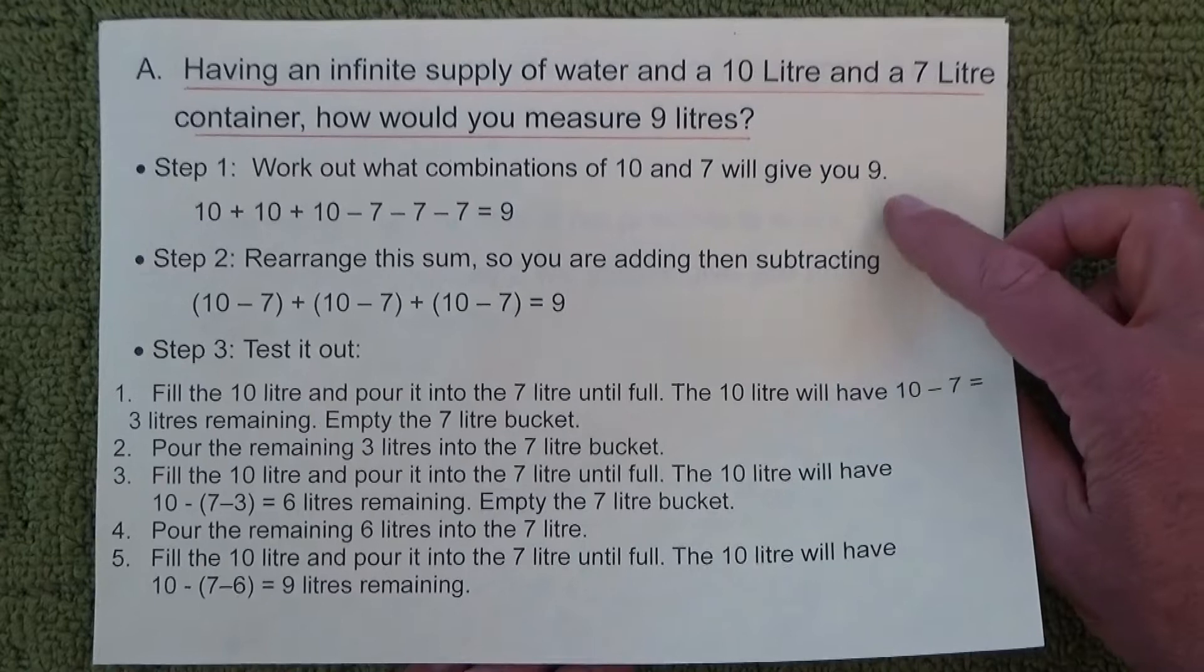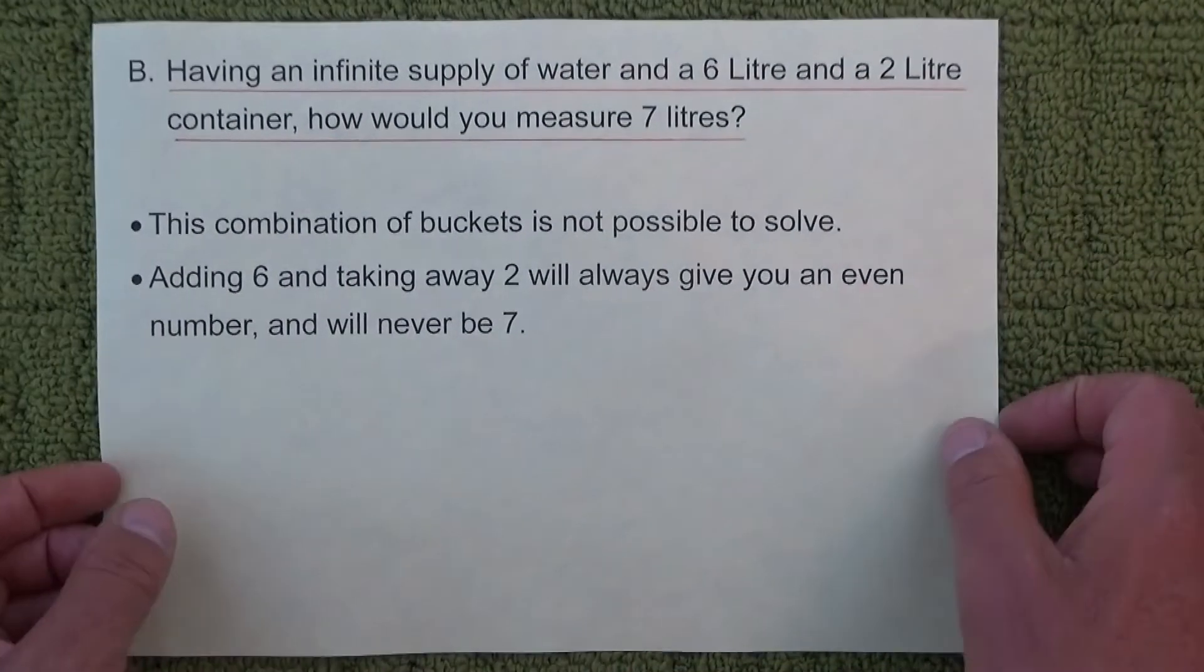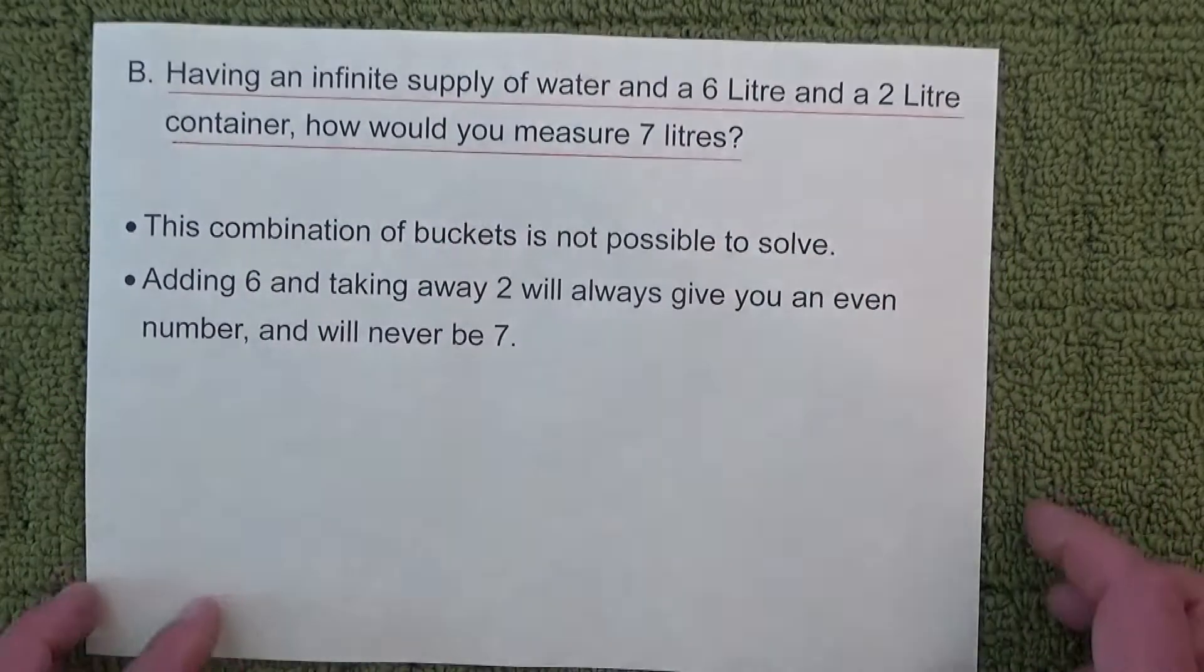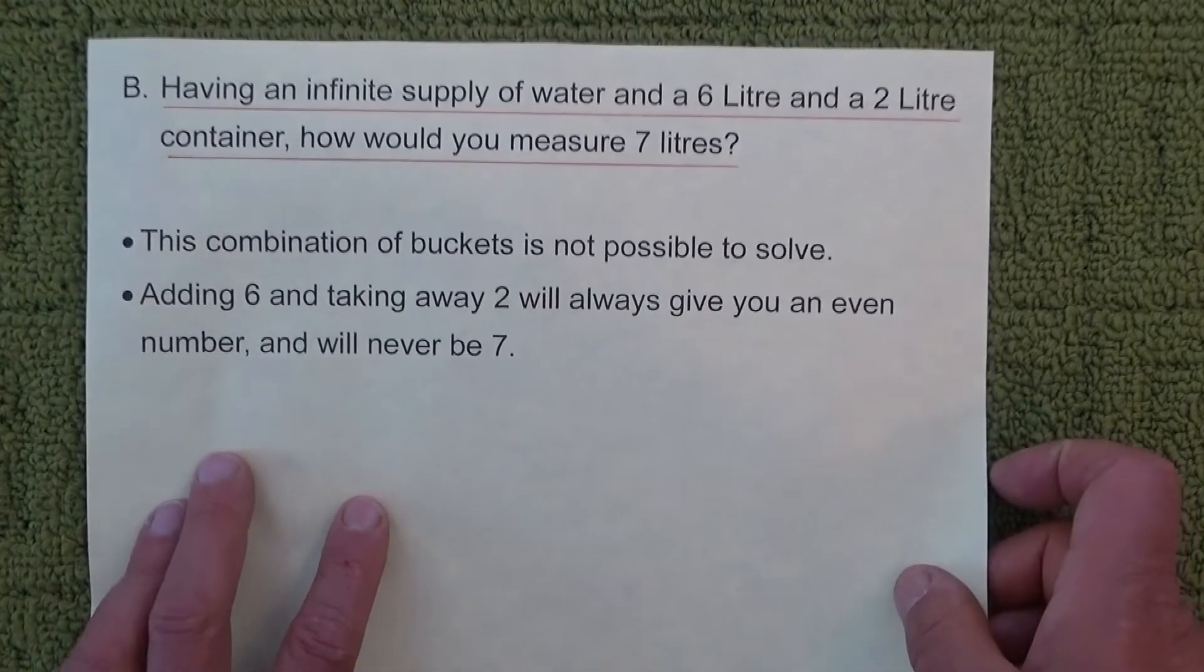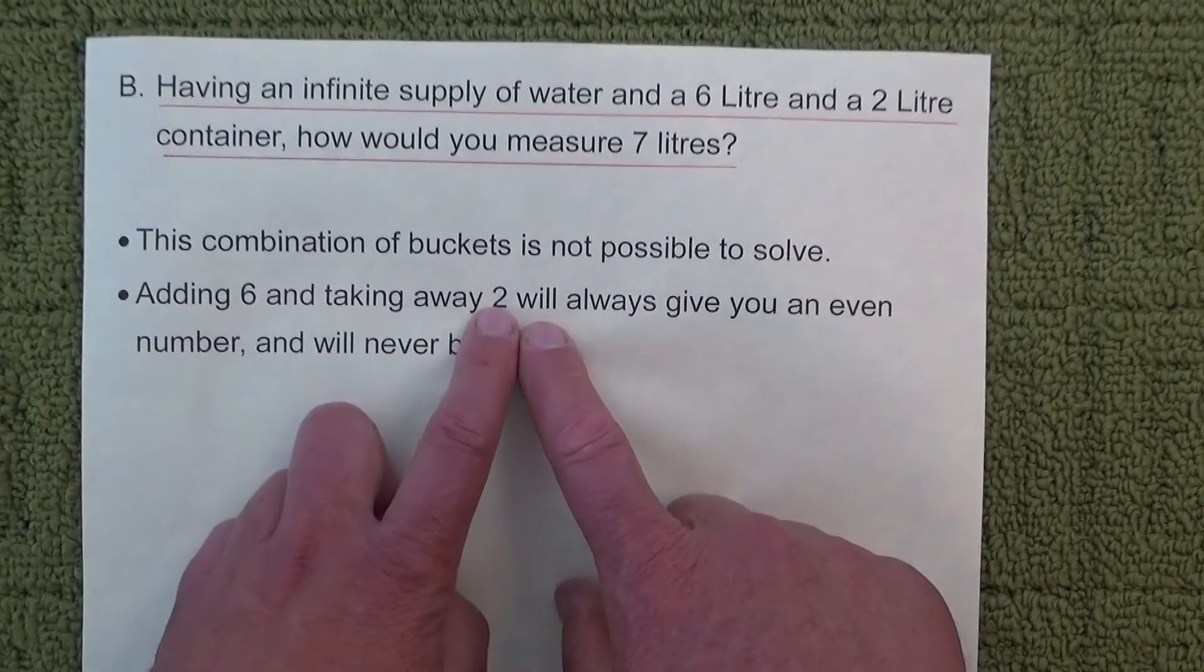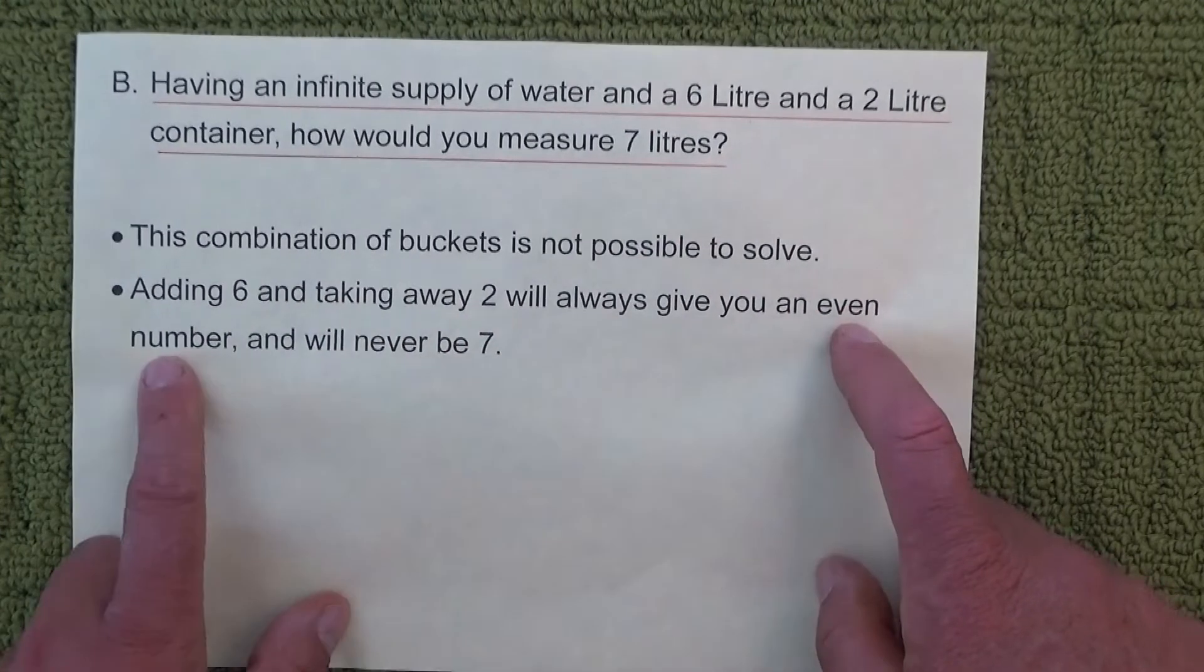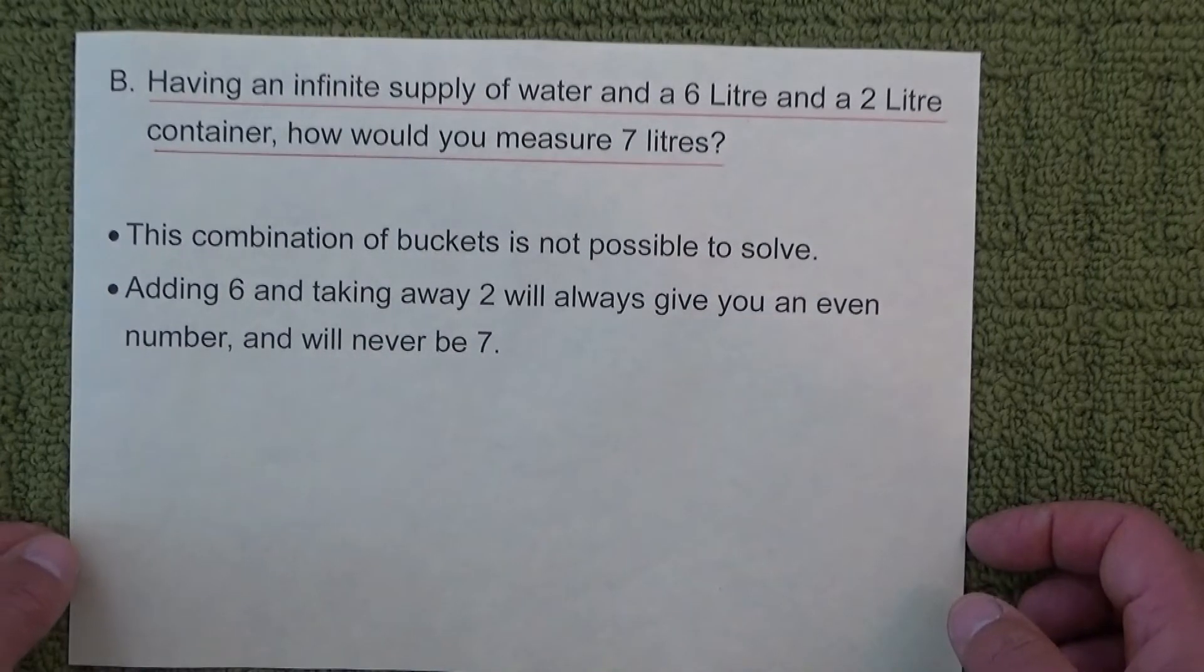And I think also I was going to mention that not all combinations have a solution. One that I was looking at before is if you've got a 6 litre and a 2 litre container, how would you measure 7 litres? And this combination of buckets is not possible to solve. No matter how many times you add 6 and take away 2, or add 2 and take away 6, you always end up with an even number and it will never be 7. So not all combinations of buckets and outcomes have a solution.